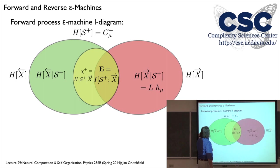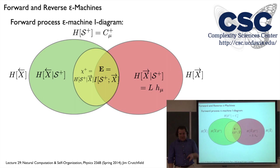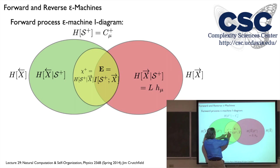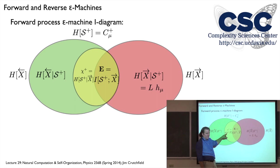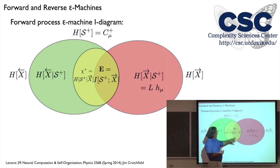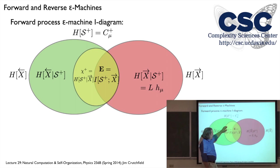Now: take out the state information — that's the green wedge, which is the uncertainty in the past given the forward causal state. A slightly strange quantity, but the diagram puts it there and we have to acknowledge it. And we finally have this last piece — the mystery wedge, the forward crypticity. This is the state information minus the future. Graphically this makes sense: what forward causal state am I in given that I know the future? The same futures can lead from different causal states, so there can be some uncertainty.